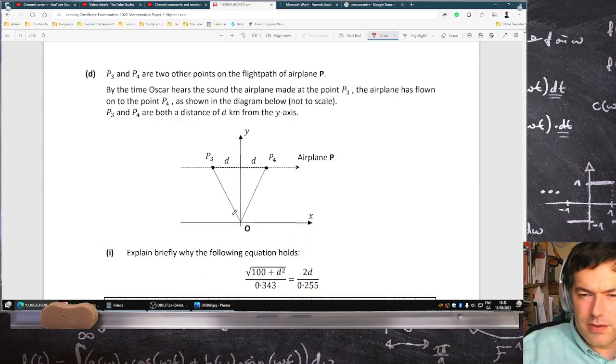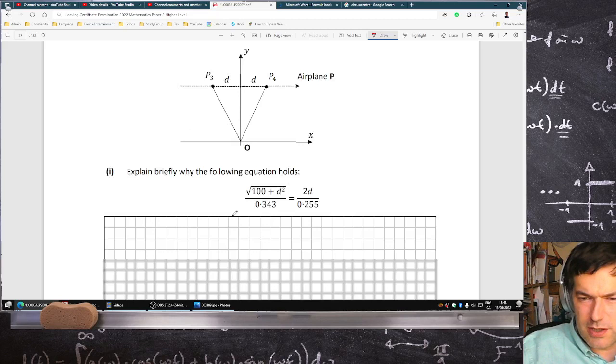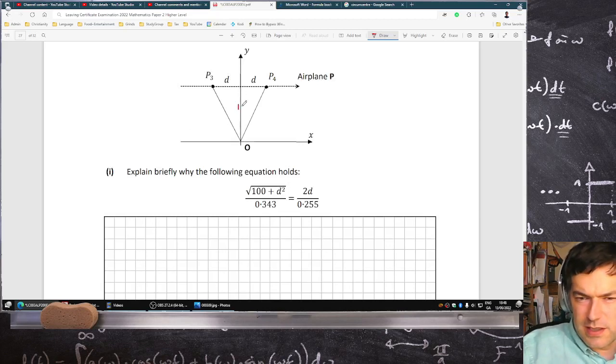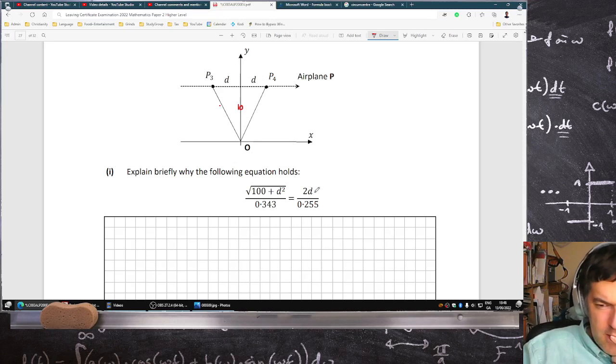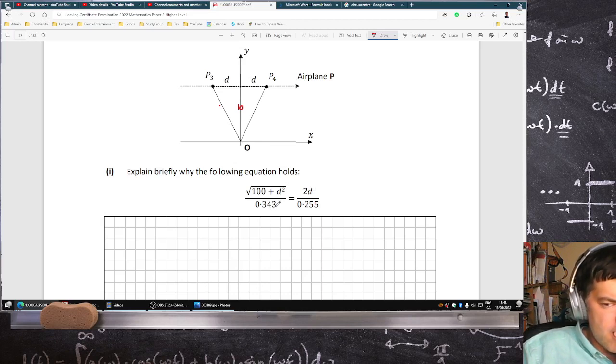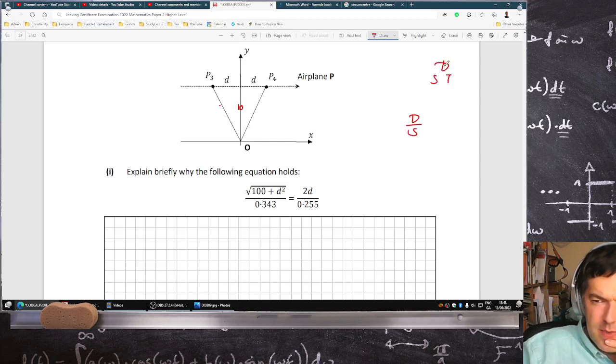Okay, P3 and P4 are two other points on the flight path. By the time Oscar hears the sound of the plane made at point three, the airplane has found P4. Explain briefly why the following equation holds true. It looks like Pythagorean. This is 10. Looks like it's root 100 plus d squared. That looks like it's coming about from the speed.